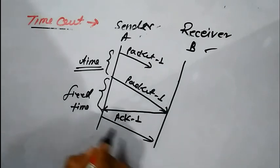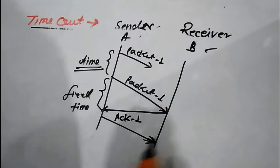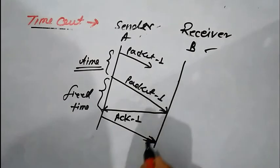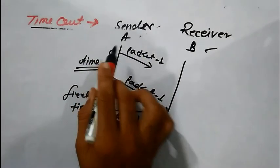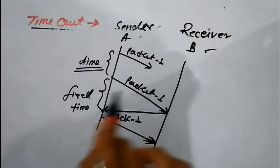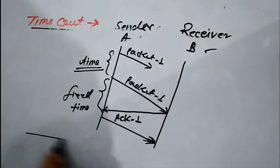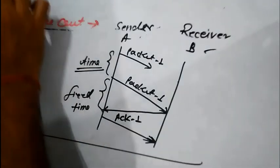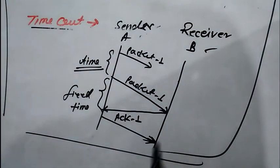The sender understands that the delivery of the packet is reliable and sends the next packet. In this scenario, the delivery of the packet is reliable. This complete scenario is known as the stop-and-wait protocol.